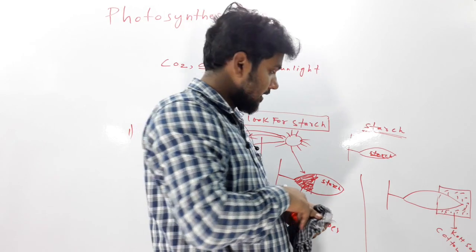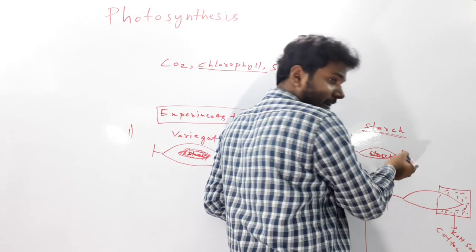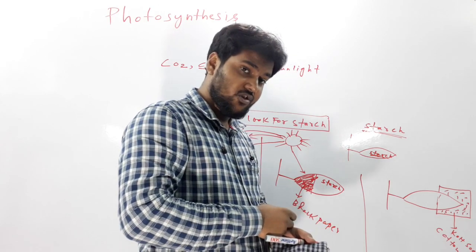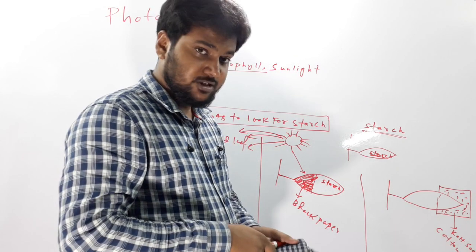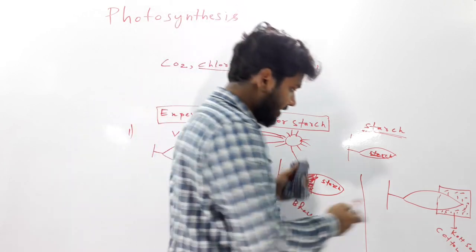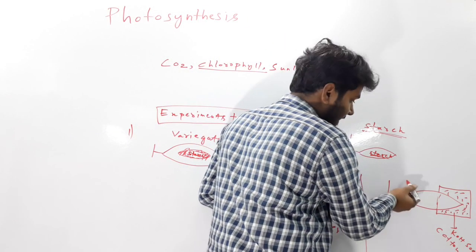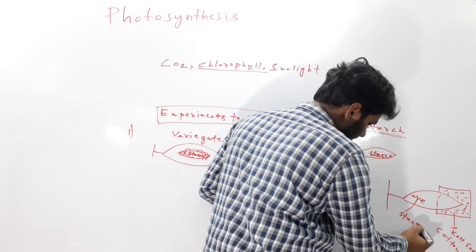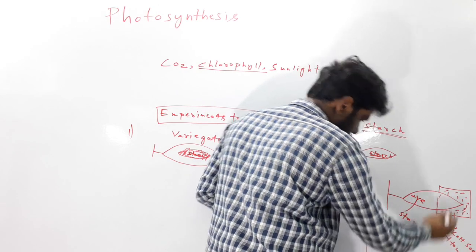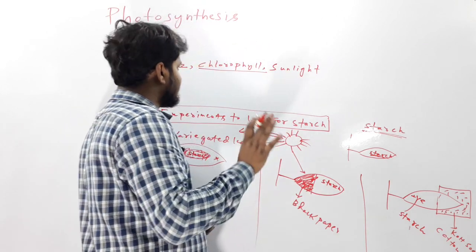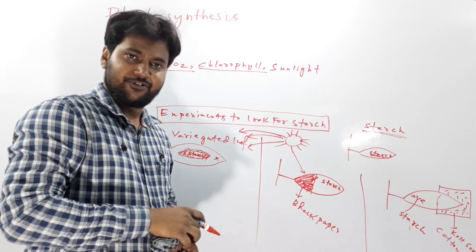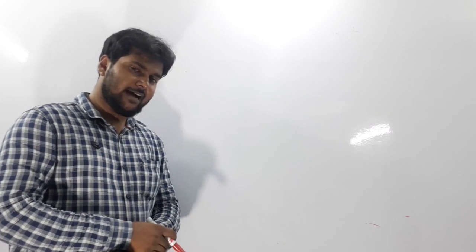The other part of the leaf remained open to air. On testing for starch, only the part open to air was positive for starch. This experiment indicates the necessity of CO2 for photosynthesis.